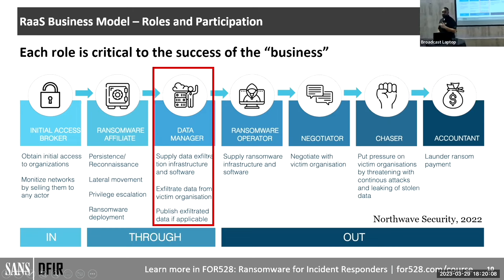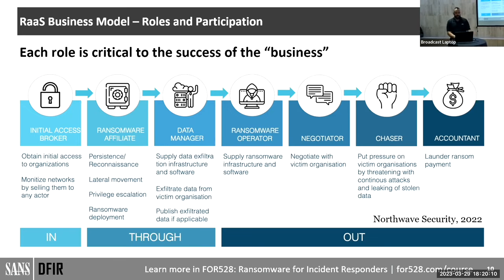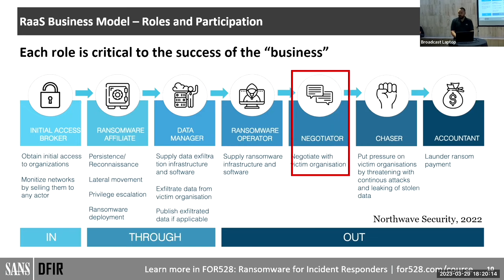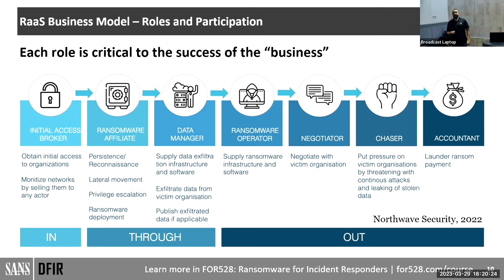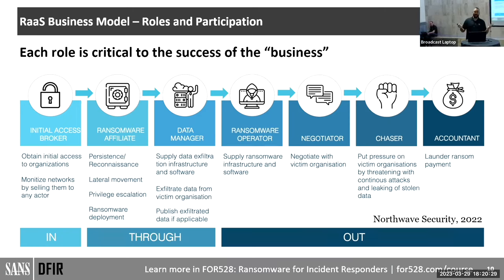During ransomware negotiations, one of the roles is to be the negotiator. One of their tactics is to pull your insurance documents — so that when they demand X million and you say 'we don't have it,' they say: 'actually, we know you're covered for that.' The ransomware operators' job is to upkeep the name brand, develop the ransomware, and set up infrastructure — but they're not primarily the ones you'll actively be dealing with. That's the affiliates.